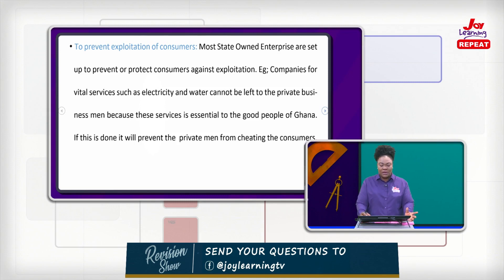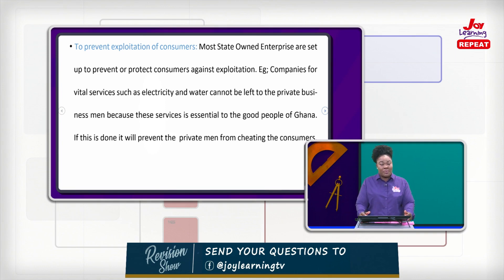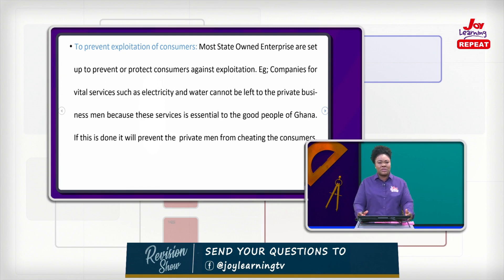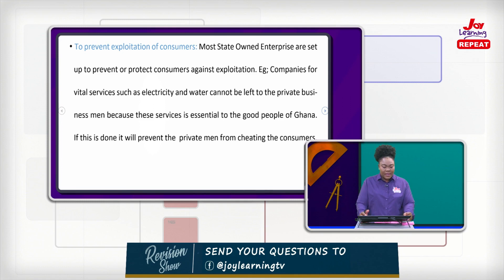Most state-owned enterprises are set up to prevent or protect consumers against exploitation. Companies for vital services such as electricity and water cannot be left to private businessmen, because when people sell such things privately, they sell at very exorbitant prices. That's why the government provides these utilities to us — to prevent private businessmen from cheating their consumers.